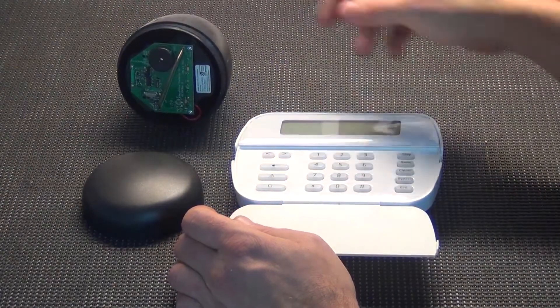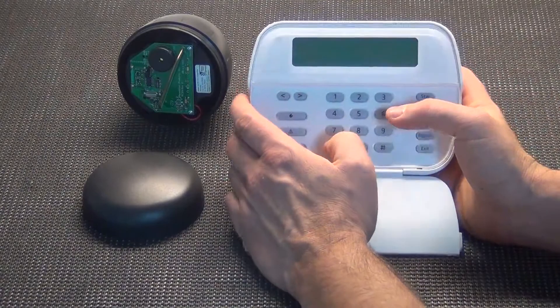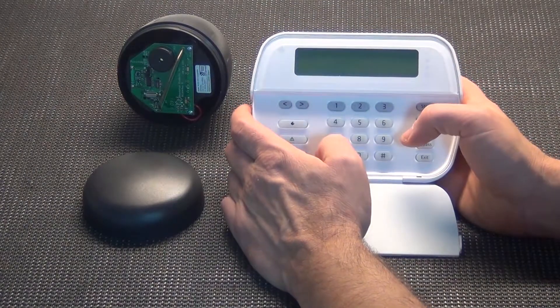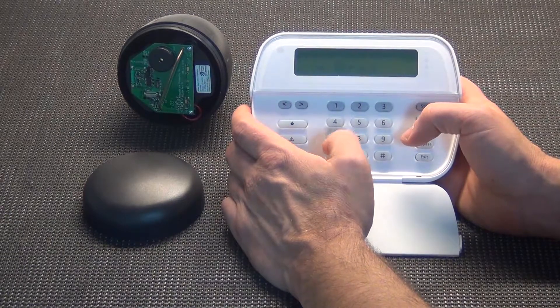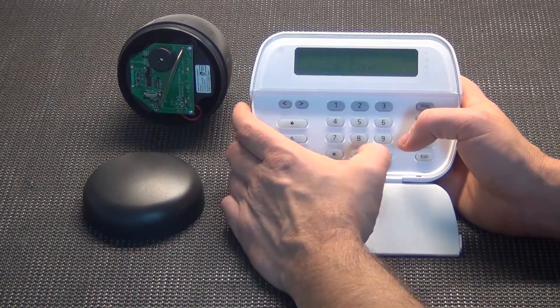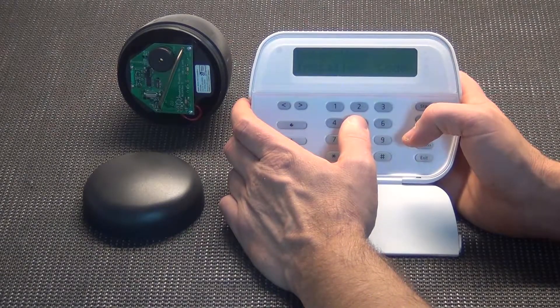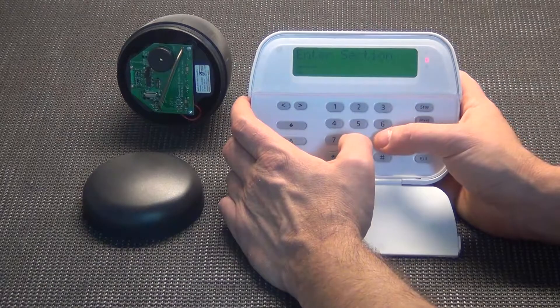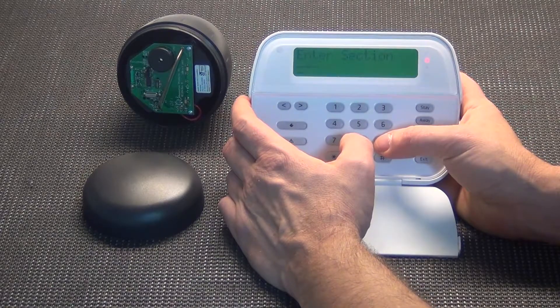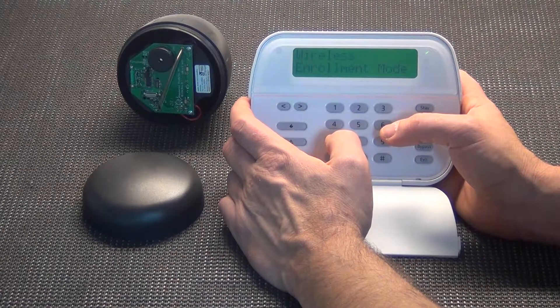What you're going to do first when you're programming this in is we're going to enroll it. So to do that, we'll hit our star key to wake the pad up and hit star eight. Let's go back, star eight, enter your installer's code 5555. Then it asks for a section. We need to go to wireless enrollment mode section 898. And as you see there, it says wireless enrollment mode.